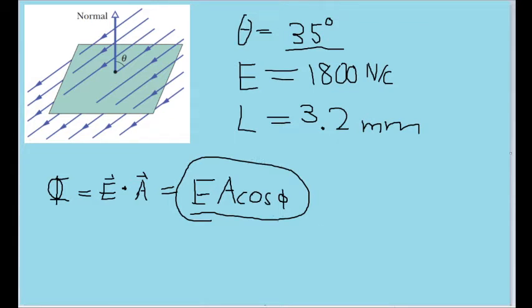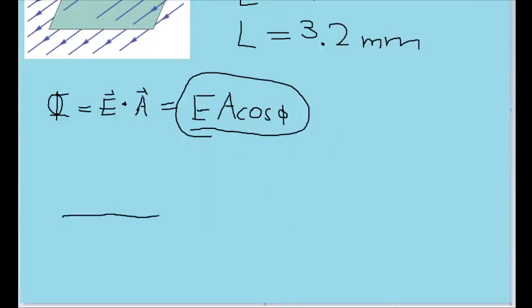Remember, in the function for the dot product, the angle of the cosine refers to the angle between the directions that the E and A vectors are pointing. But let's take a closer look at this diagram here. If I have a horizontal line here representing the surface itself, and I have the area vector coming out of it, like such.